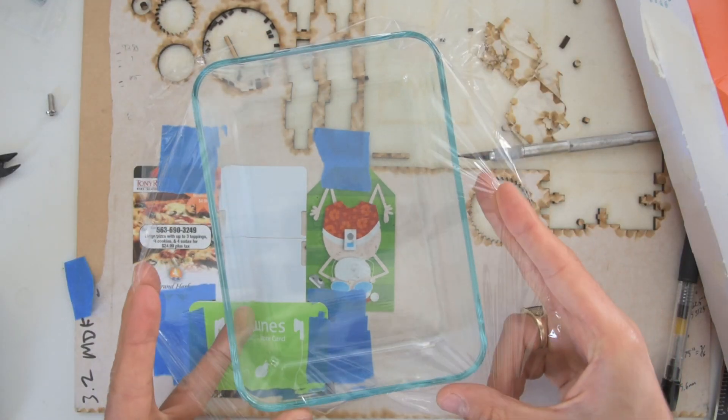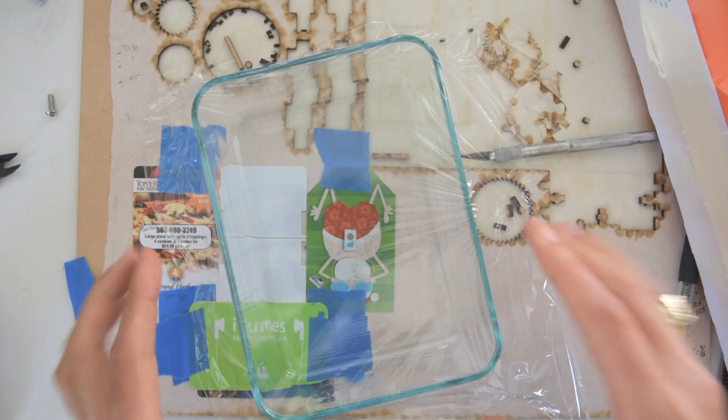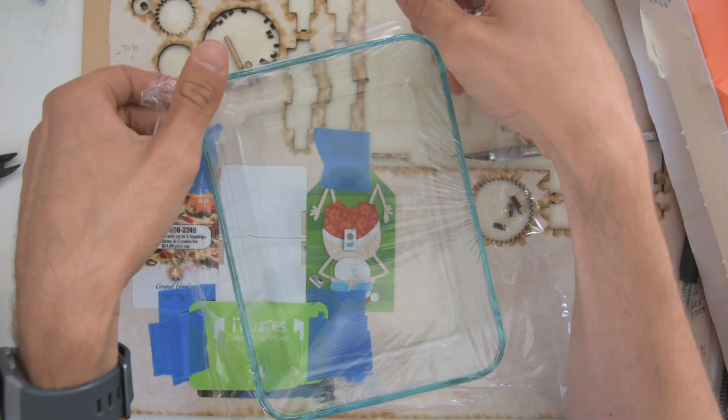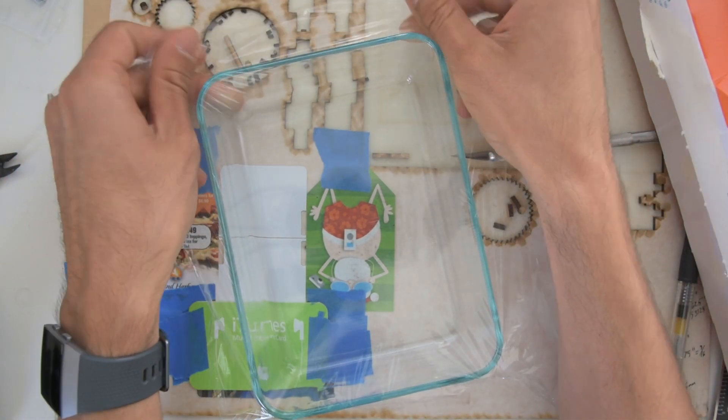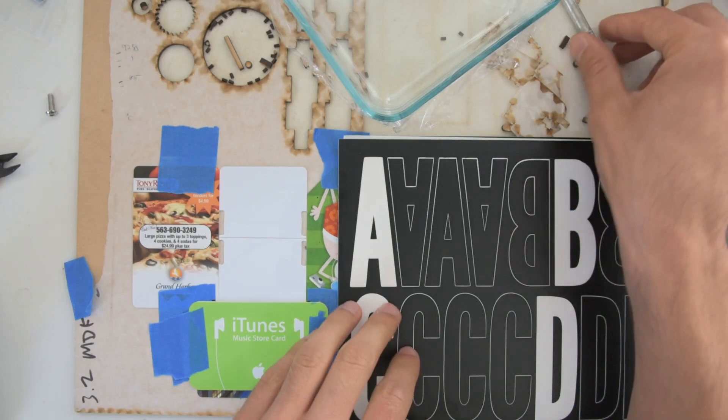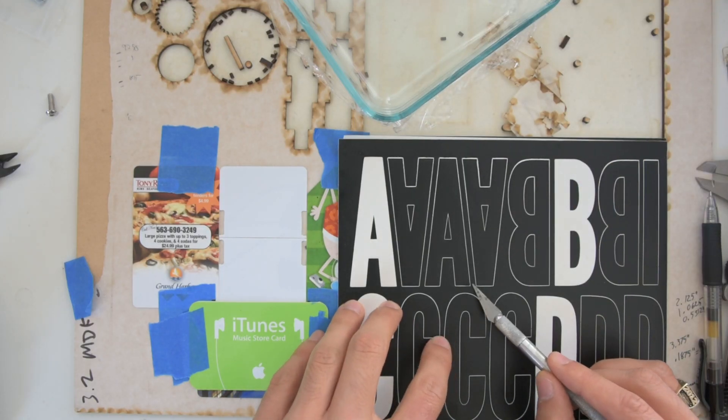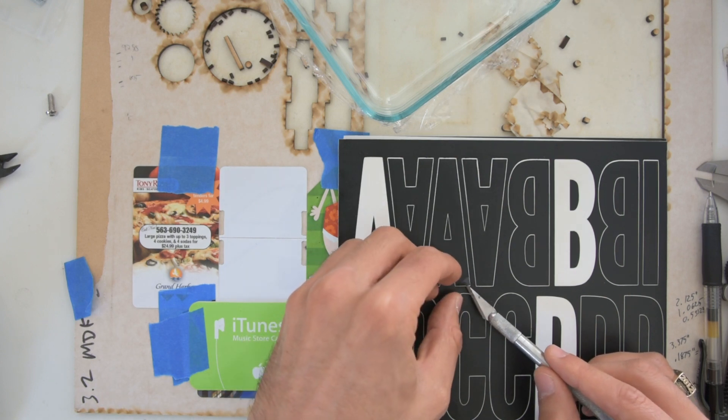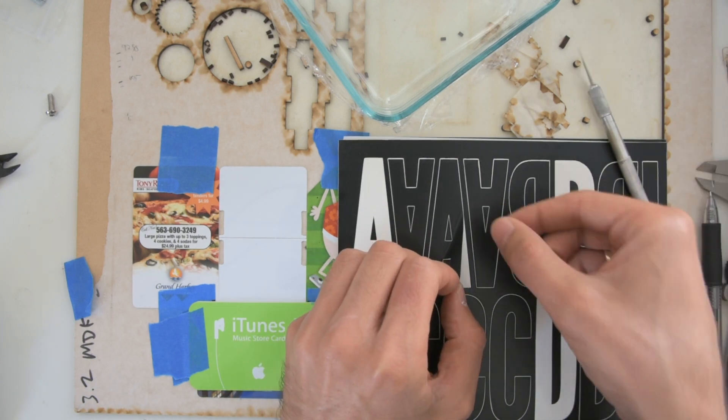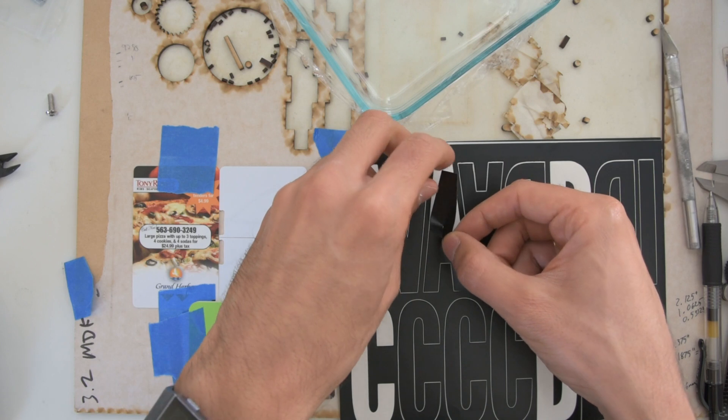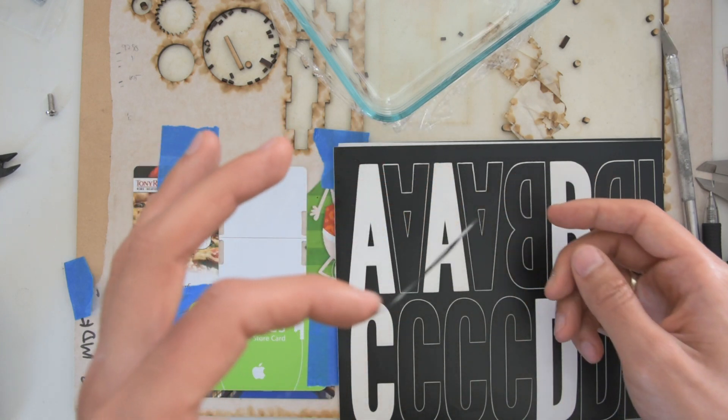And we're going to try and make this as flat as we can, get rid of all those wrinkles. So to apply our stickers now, I'm just going to use the hobby knife here to help peel up one of these stickers.